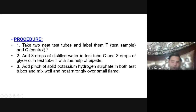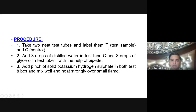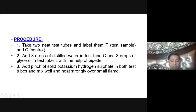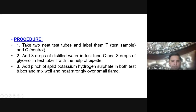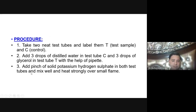What is the procedure? Take two neat and clean test tubes and label them: T for test sample and C for negative control. Add three drops of distilled water to the negative control test tube, and three drops of glycerol or glycerol-containing lipid to test tube T using a pipette. Then add a pinch of solid potassium hydrogen sulfate, or one or a few drops of sulfuric acid, to test tube T and mix well.